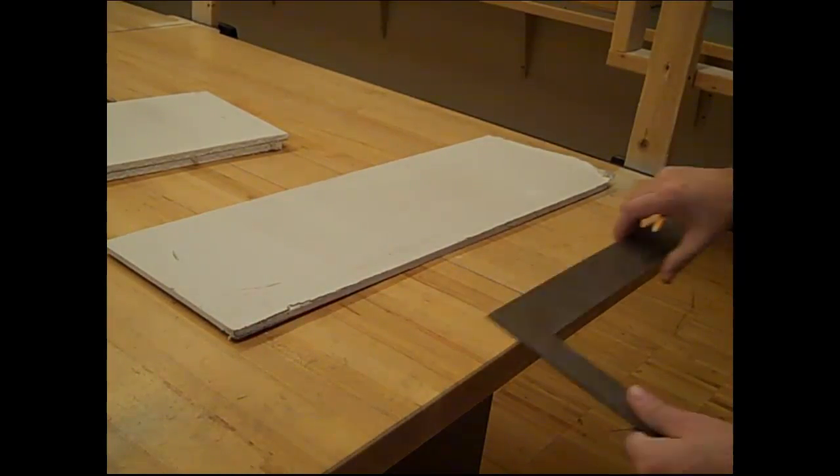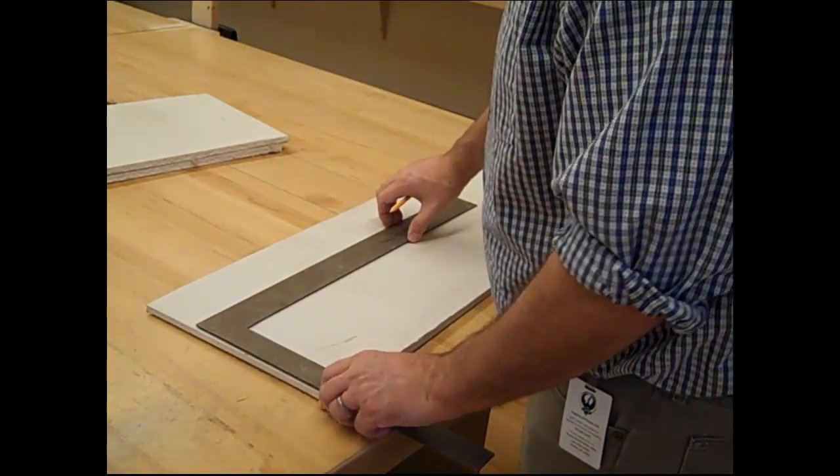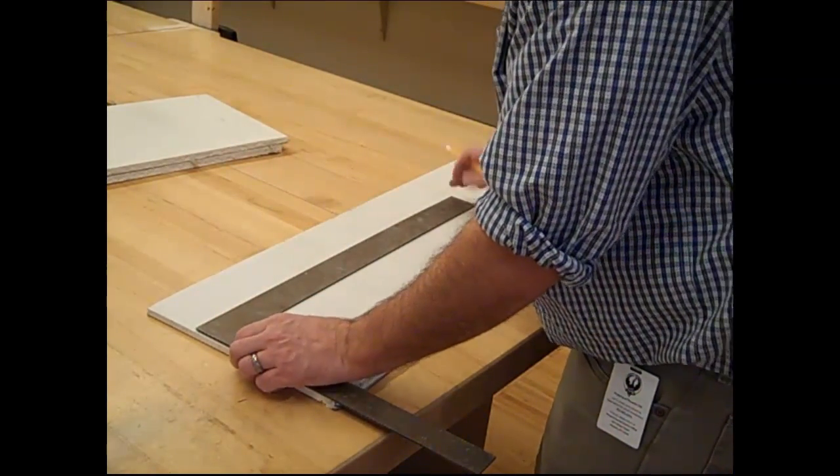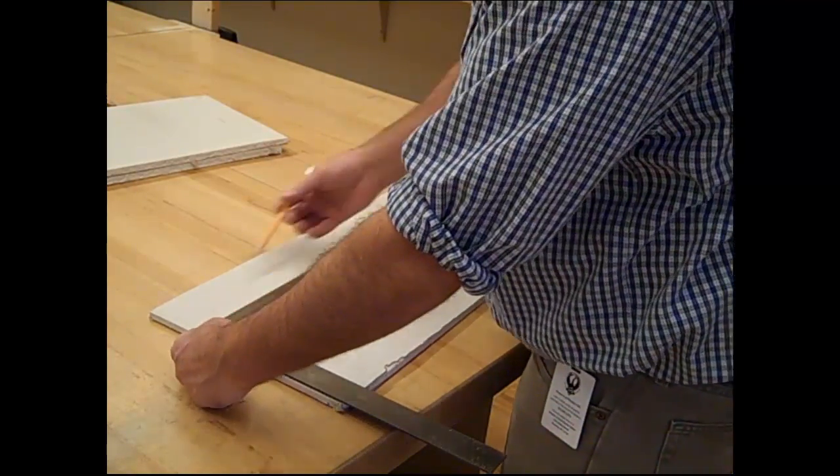We're going to mark off 12 inches of sheetrock. I'll use a square here. On the square you'll find a ruler. I'm going to mark 12 inches with my pencil.